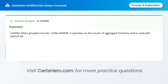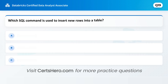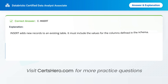This one's important. Which SQL command is used to insert new rows into a table? A. Add. B. Append. C. Insert. Correct answer is C: Insert. INSERT adds new records to an existing table. It must include the values for the columns defined in the schema.